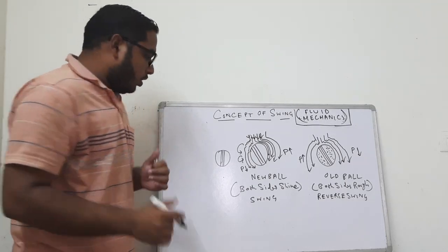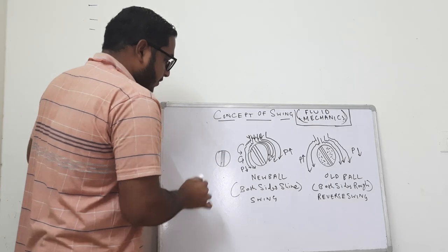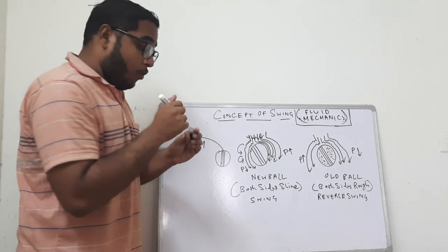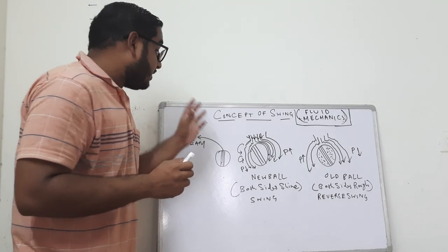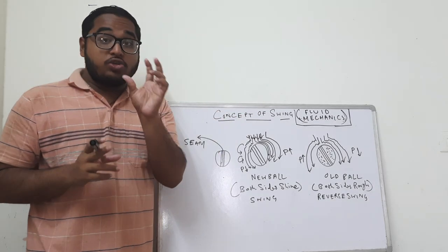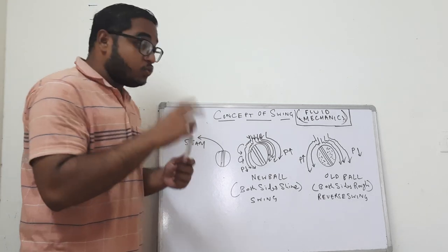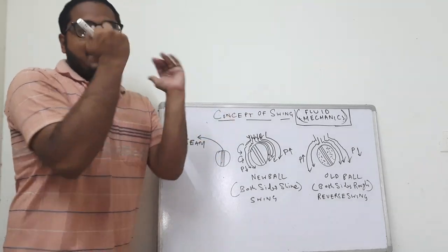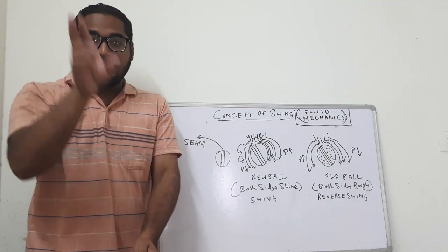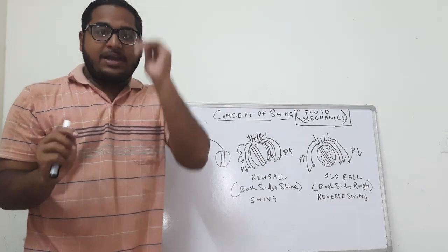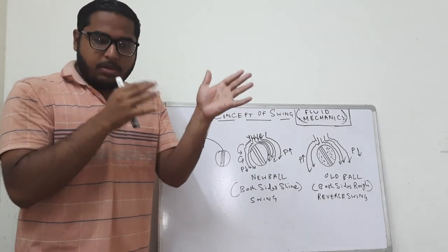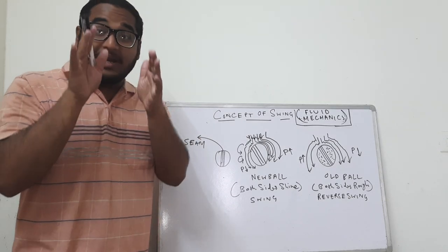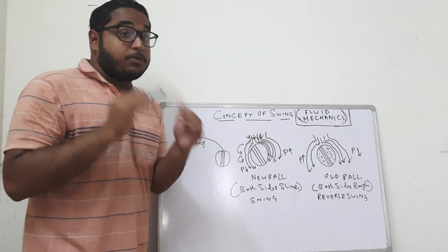They were roughening one surface of the ball using sandpaper while keeping the other surface shiny. Why were they doing that? What happens if one surface is rough and one is shiny? What if both surfaces are shiny? What role does the seam play? Let us first consider the structure of the ball to understand the concept of swing, explained in terms of fluid mechanics.